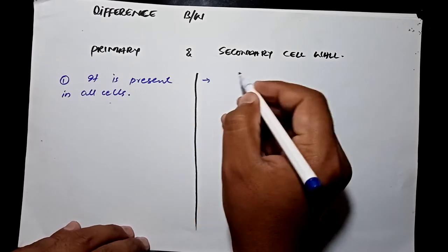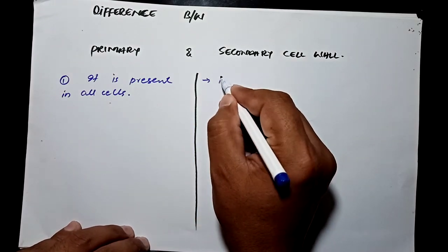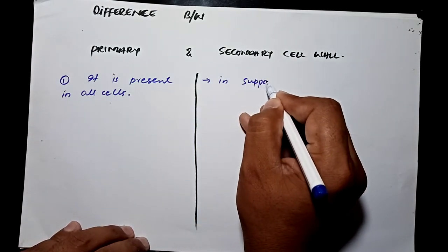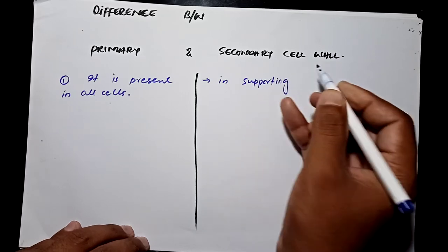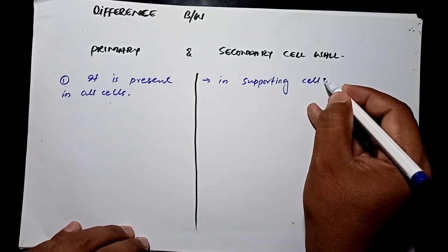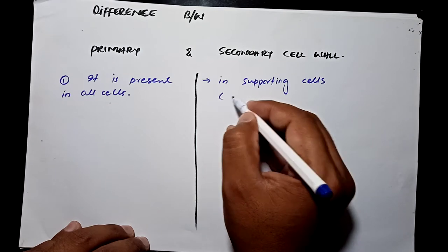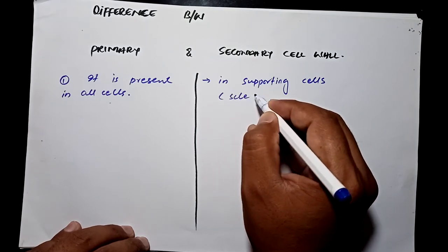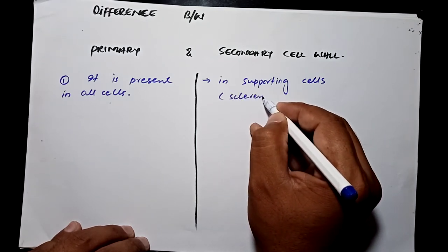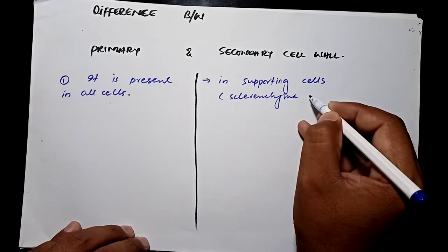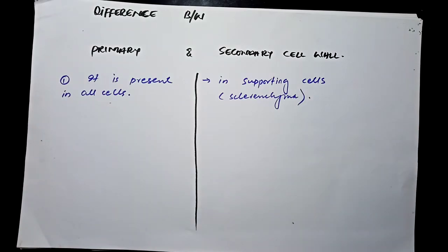Secondary cell wall is present in supporting cells. What are the supporting cells? The cells which provide support to the plant. Supporting cells are known as the sclerenchyma cells, so it is present in the sclerenchyma cells.